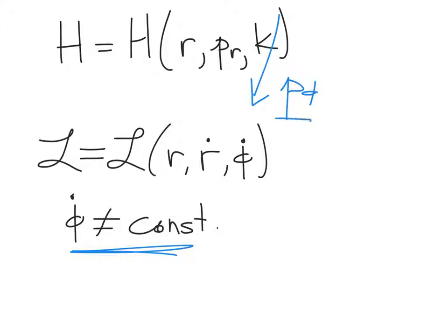In many cases, you'll have a generalized momentum for a coordinate that is a constant. And if that generalized momentum is a constant, then that associated coordinate, in this case phi, is ignorable. It just represents a constant that's introduced into the Hamiltonian. Thank you.